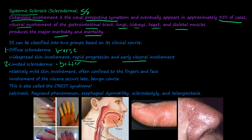If your GI tract, lungs, kidneys, heart, and skeletal muscle gets involved, then that's going to be a faster downward spiral. Limited scleroderma is relatively mild skin involvement, often confined just to the fingers and the face. The involvement of the viscera occurs very late, following a kind of benign course. The prognosis of limited scleroderma is better than the prognosis of diffuse scleroderma.